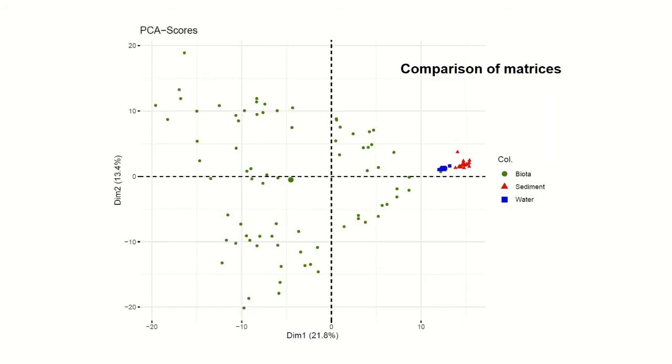So, now to the results for the PCAs, we can see here a comparison of the three matrices. We have sediment samples in red, water samples in blue, and biota samples in green, and we can see that the sediment samples cluster together as do the water samples, which means they are similar to each other in their chemical composition. The biota samples are kind of all over the place, which means they have a very different chemical composition, which makes sense because it's different types of species from different stations.